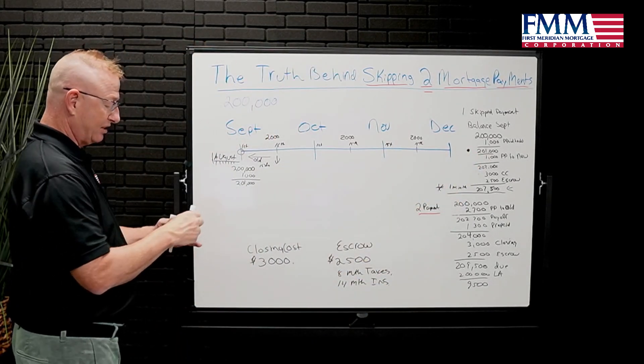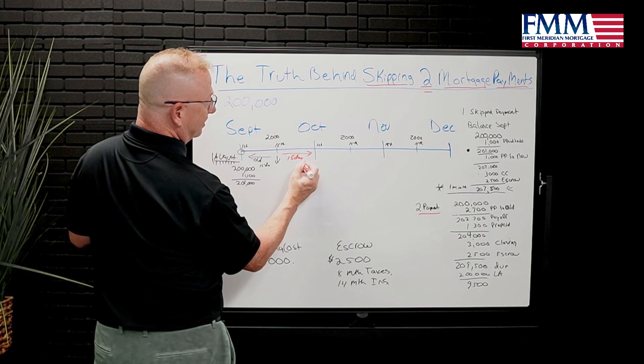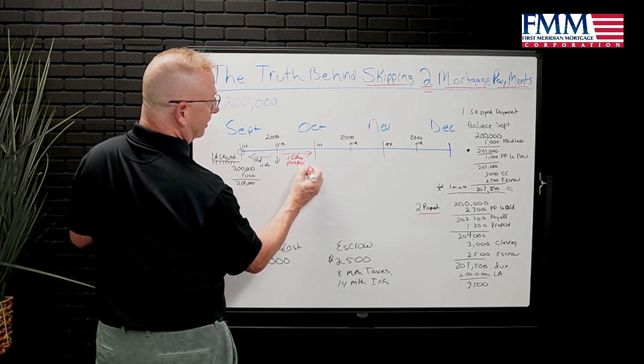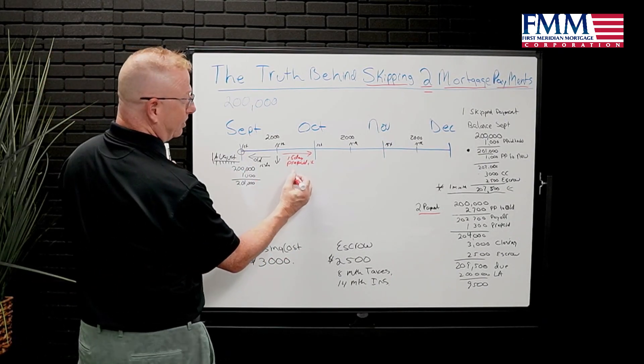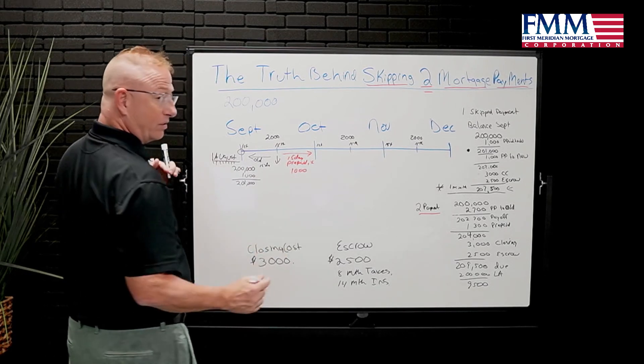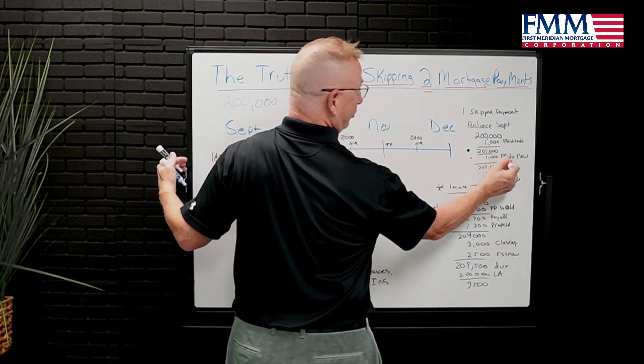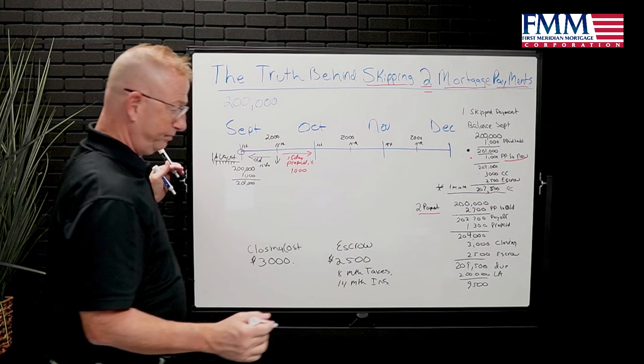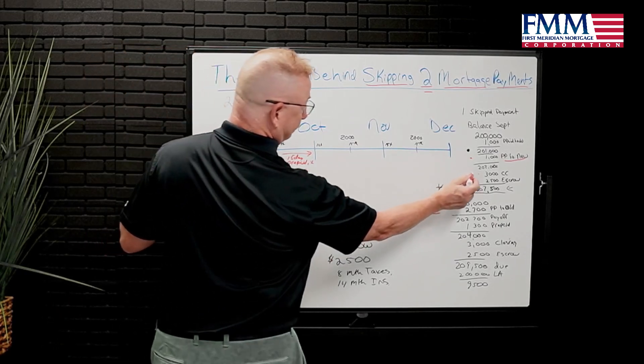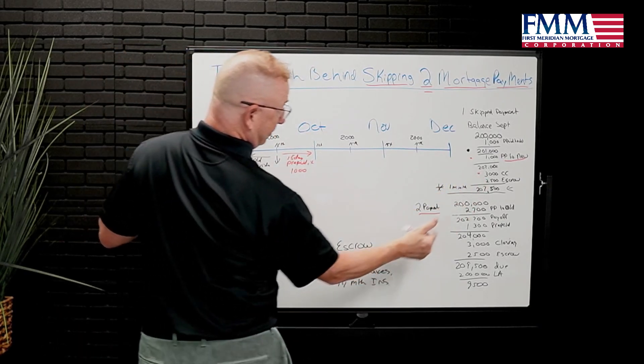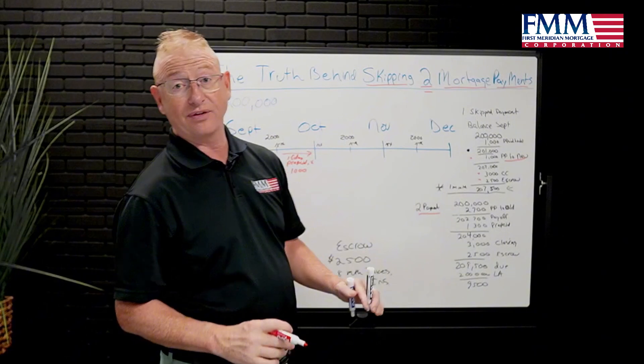Now, the new loan is due his 15 days of interest, and this is your prepaid interest. It's the only time you're ever going to prepay interest on that specific mortgage. We're going to call that $1,000 also. That is your prepaid interest to the new lender. So at closing, you also have to bring your closing cost and your escrows. So your total obligation in this one-month cycle is $207,500.